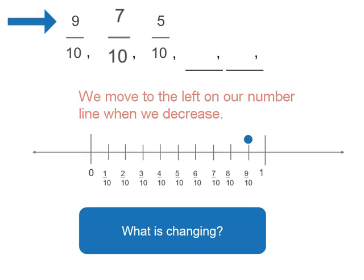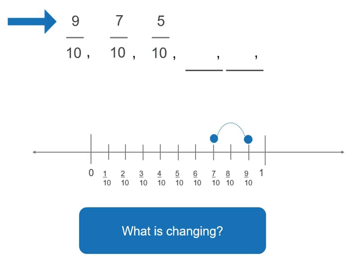We're actually subtracting 2 tenths to get to 7 tenths. And then we go to 5 tenths. Now that means we've jumped to the left another 2 tenths.